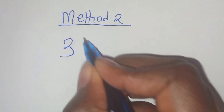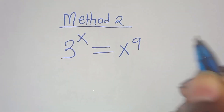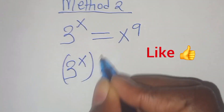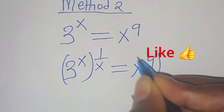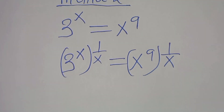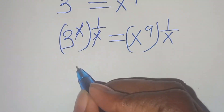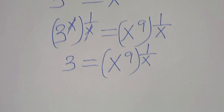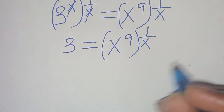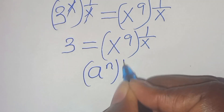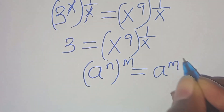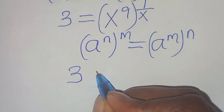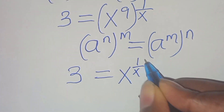In method 2, we have 3 to the power of x equal to x to the power of 9. The first step: let's eliminate the power x by multiplying both sides by 1 over x. So we have 3, equal to x to the power of 9, raised to the power of 1 over x. Using the property (a^n)^m = (a^m)^n, then we have 3 equal to x to the power of 1 over x, raised to the power of 9.